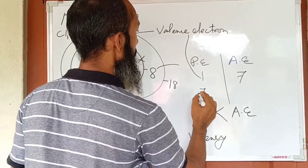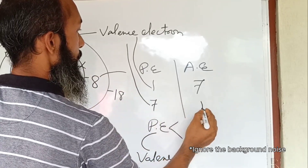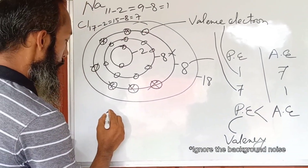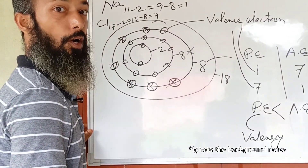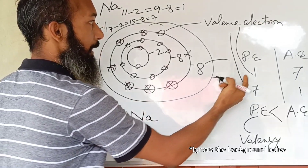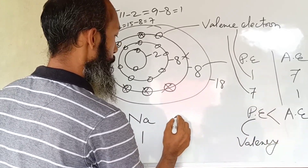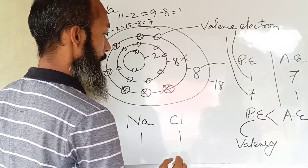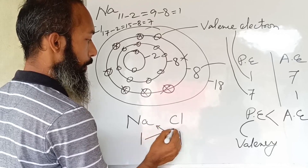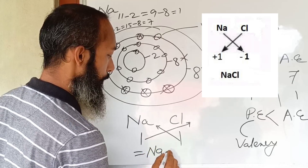For chlorine, seven electrons are the valence electrons and only one place lies vacant, so the valency of chlorine is one. Now, if we make the molecular formula of sodium chloride: sodium has a valency of one, and chlorine also has a valency of one. The valency of chlorine goes towards sodium and the valency of sodium goes towards chlorine — this is how the molecular formula NaCl is formed.